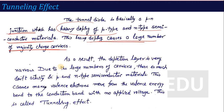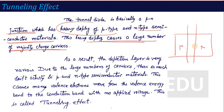As a result, the depletion layer is very narrow. When P and N type are joined together, there is a region where electrons and holes are recombined. On the P side you will see net negative ions or acceptor ions, and on the N type you have net donor ions. But here, because doping is very high, the acceptor and donor ions are low compared to the ordinary PN junction diode.